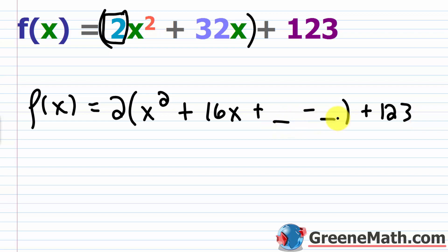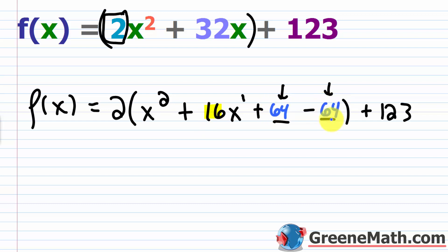Now, what are the two missing values? Take the coefficient of x inside the parentheses, which is 16, cut it in half to get 8, and square it to get 64. Cut it in half and square — that's the rule. So I add 64 inside the parentheses. This completes the square.